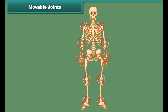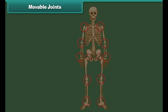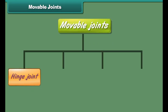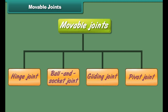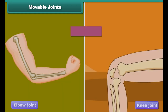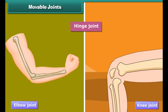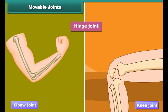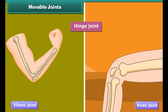Let us first discuss what immovable joints are. Immovable joints are the joints where no movement of the bones is possible. The joints of the bones of the skull are immovable joints. Most movable joints allow free movement of the body parts, whereas in some joints only a little movement is possible.